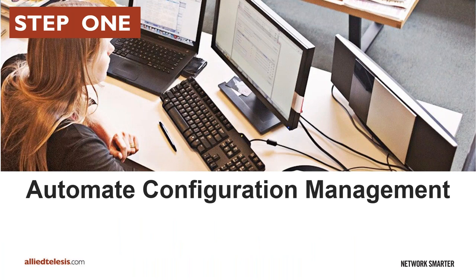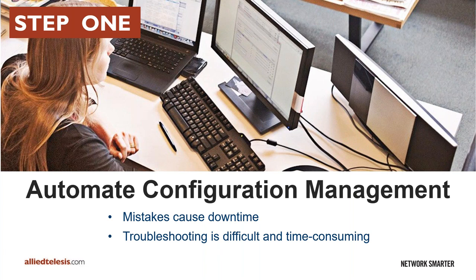Looking at our five steps to network automation, the first one is automated configuration management. Configuration management is one of the most time consuming areas of network administration. It's often a common cause of mistakes that lead to network downtime. Finding those mistakes is often literally like looking for a needle in a haystack. A third of all network outages can be attributed to human error, and much of that is in the area of configuration management because it's repetitive, mundane, and tedious — so people sometimes switch off and make mistakes.